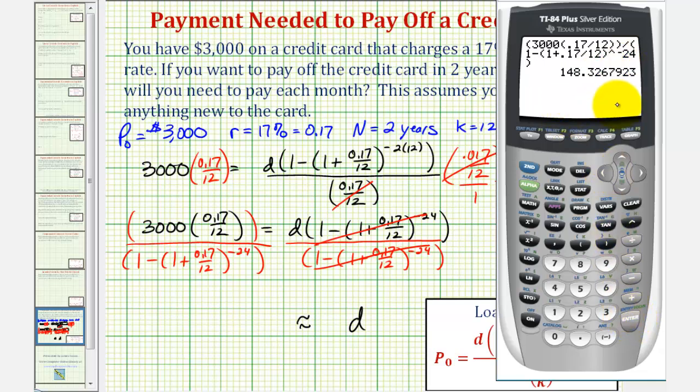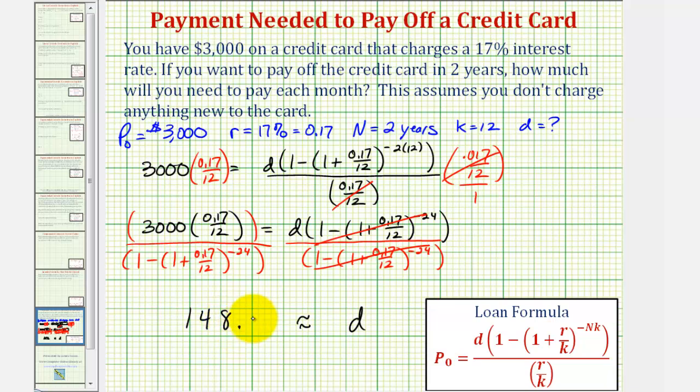So the monthly payment to the nearest cent would be $148.33. So this is the monthly payment required to pay off this credit card in two years.